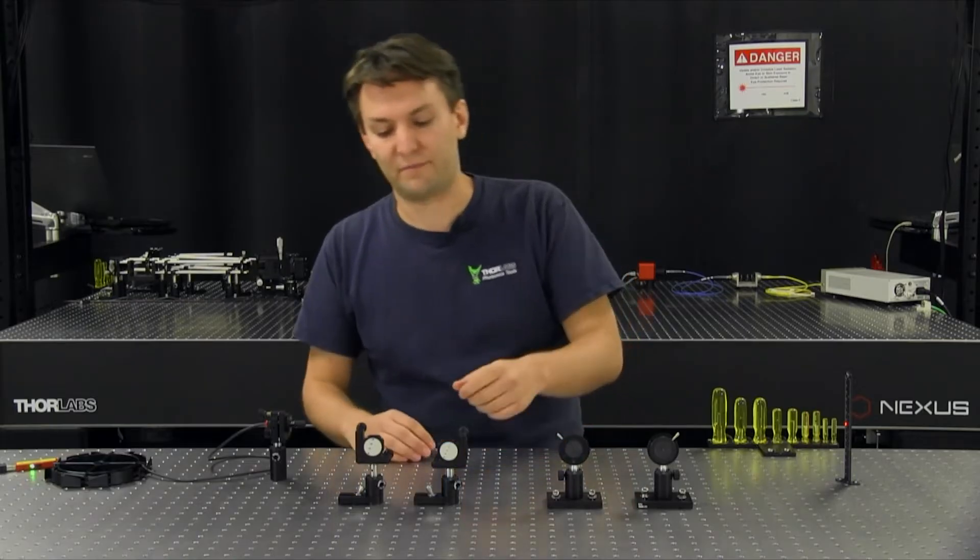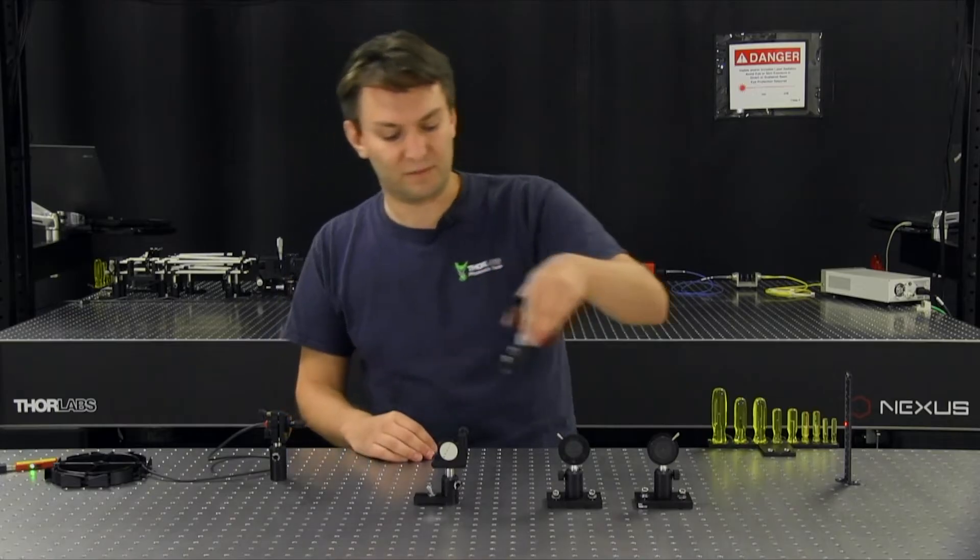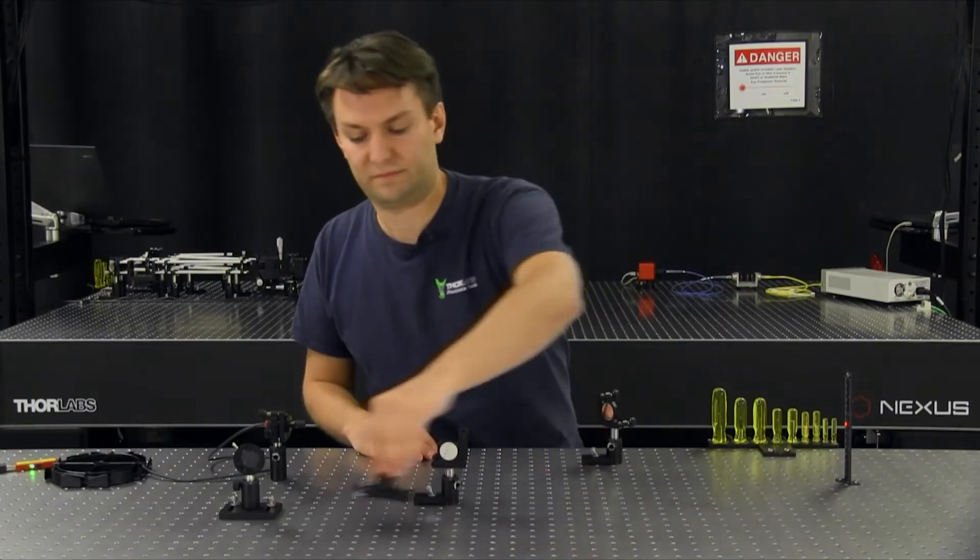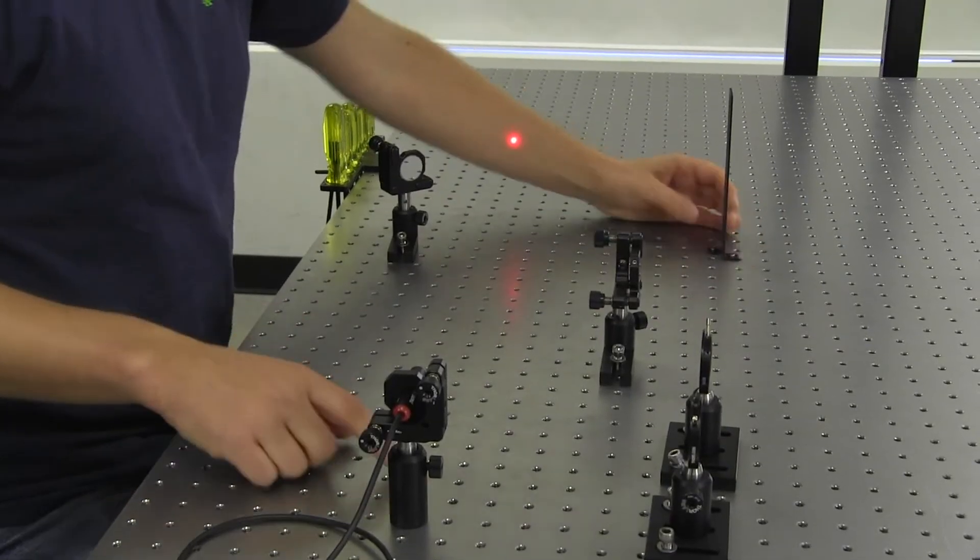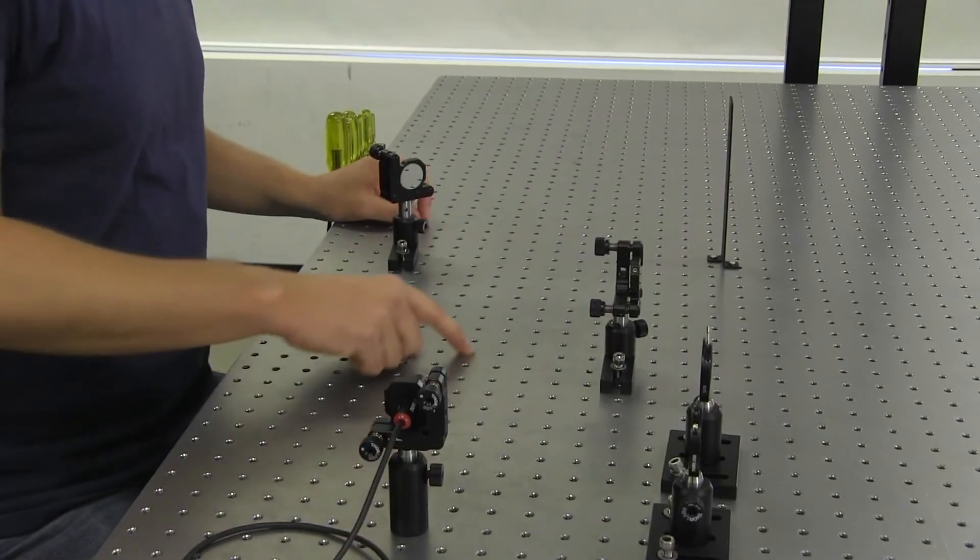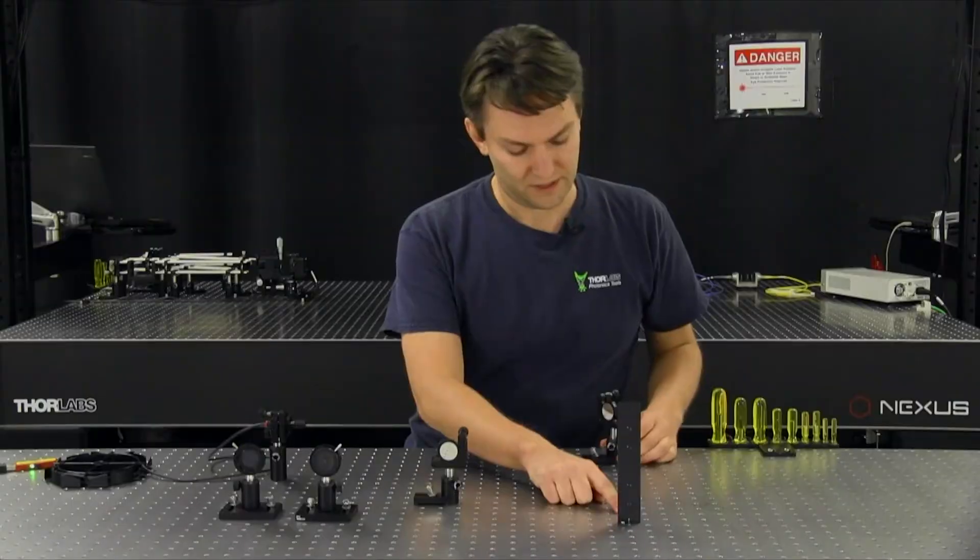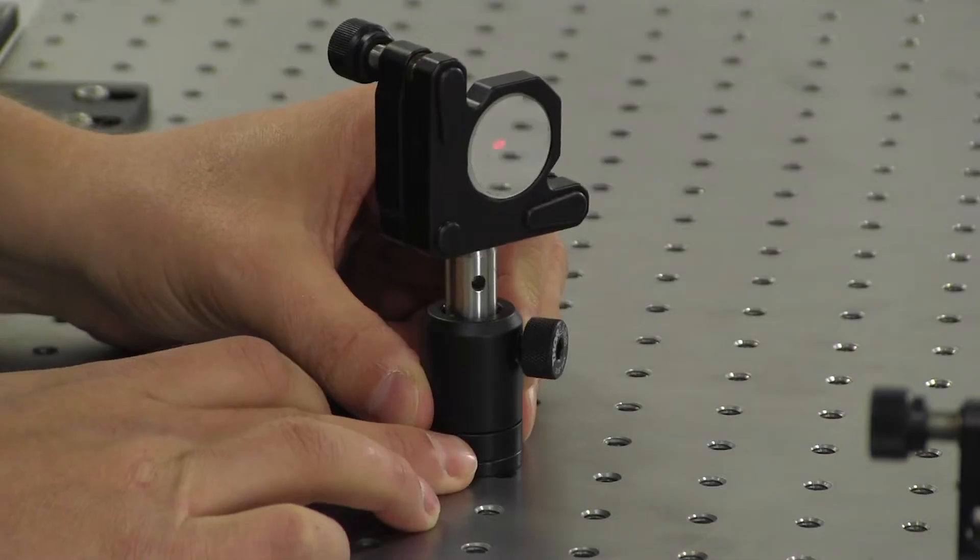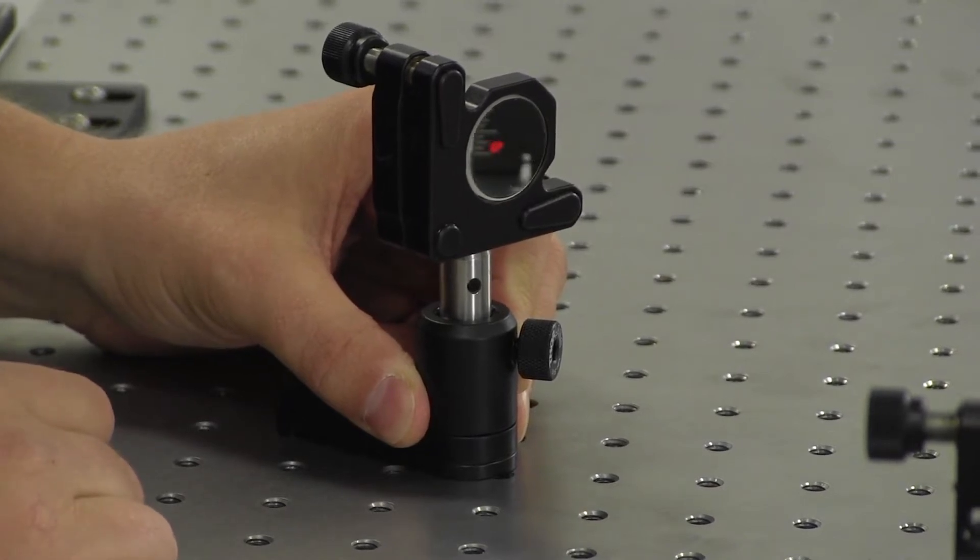So here I have my kinematic mirror mounts. And I can use these to place them in the path. And so now that the light is traveling down this row of screw holes, I'm going to send it down this row here. And I'll locate my mirror approximately in the center of the tapped hole and at a 45-degree angle.